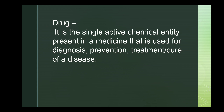A drug is the single active chemical entity present in the medicine. When you invent a new drug, it may be in powdered form. You would then convert it into a suitable dosage form like a tablet, capsule, syrup, lotion, or liniment. This conversion of the active chemical entity into a particular dosage form is known as medicine.